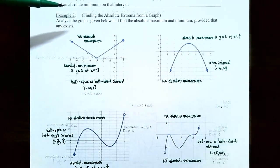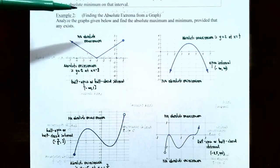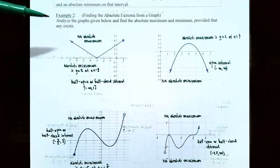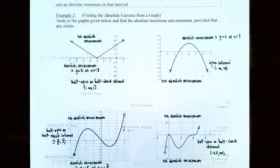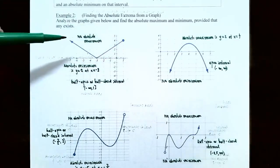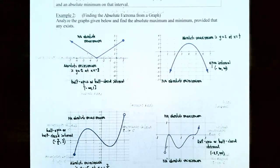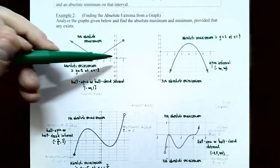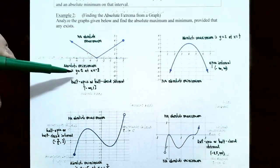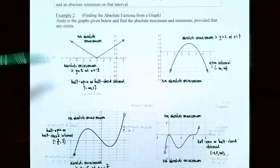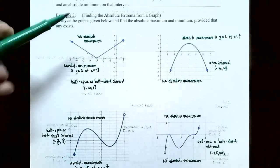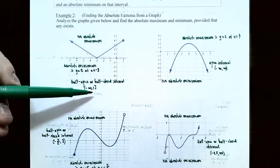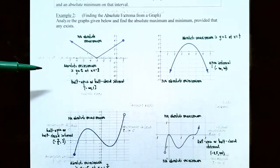Now let's look at Example 2: finding absolute extrema from a graph. In the first graph, the graph continues to the left indefinitely and stops at x equals 1. There is no absolute maximum because the graph keeps going up to the left forever, so there is no largest y value. However, there is an absolute minimum of y equals 0 occurring at x equals negative 3. Since this is a half-open interval from negative infinity to 1, we cannot guarantee both an absolute max and min.